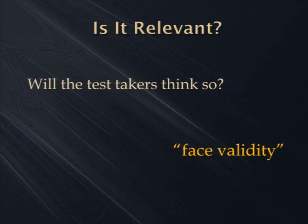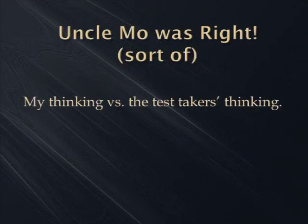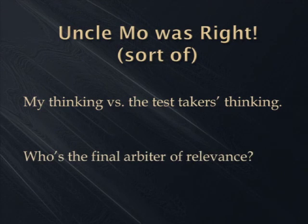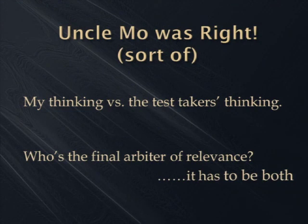The test takers are the judges of face validity. So Uncle Mo with his criticism was right — he said he doesn't see something in practice, so he doesn't care about the Carmen Meniscus sign. It's my thinking versus the test takers' thinking. Who should be the judge of relevance? It has to be both. He or she has to think it's relevant, and I have to think it's a big enough deal to test on. We have to meet in the middle. The first thing you should ask is: is Joe or Jane Sixpack going to think this is something they should be tested on?